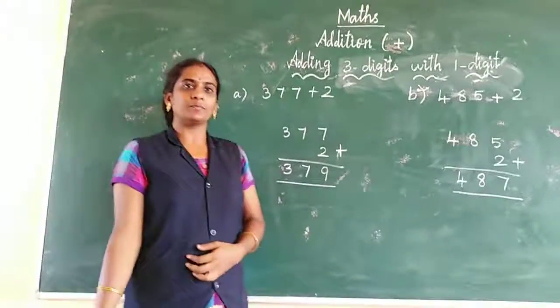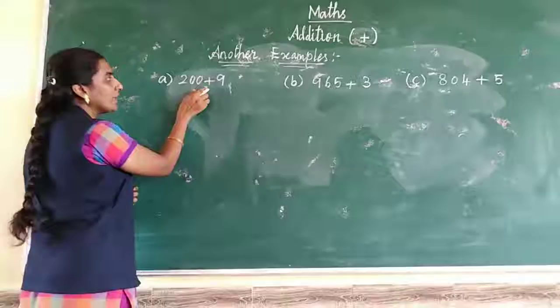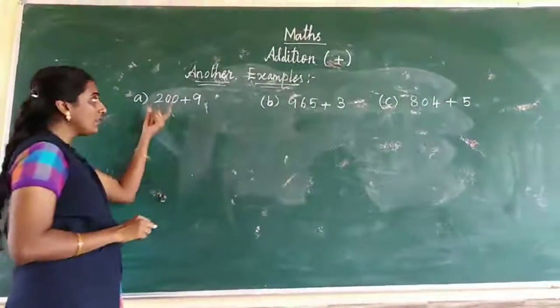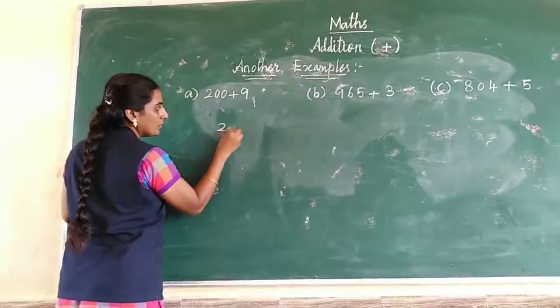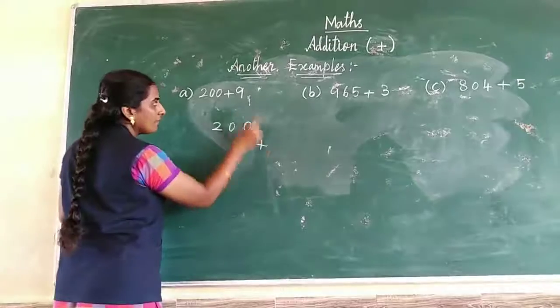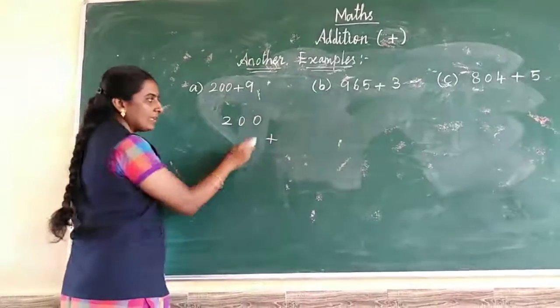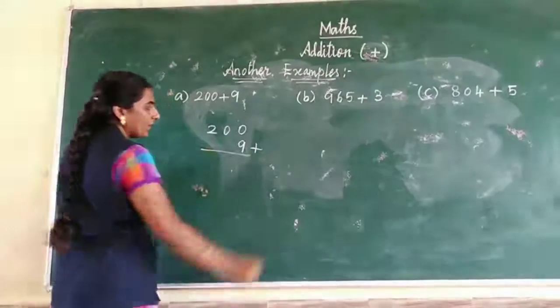Now another example: 200 plus 9. First we write 200, then plus 9. Where do we write the 9? In the ones place. Yes, correct. This is the ones place.